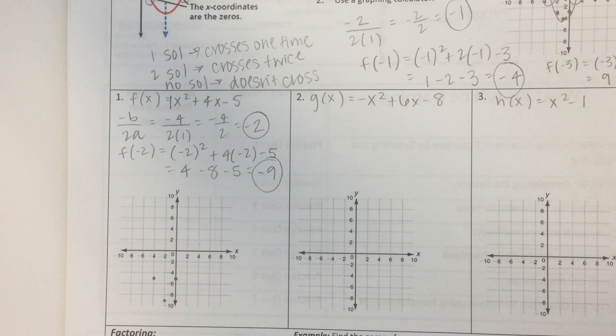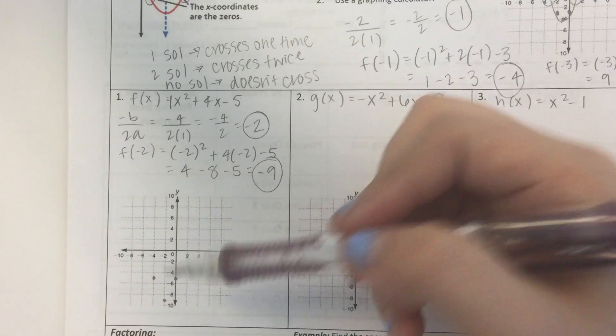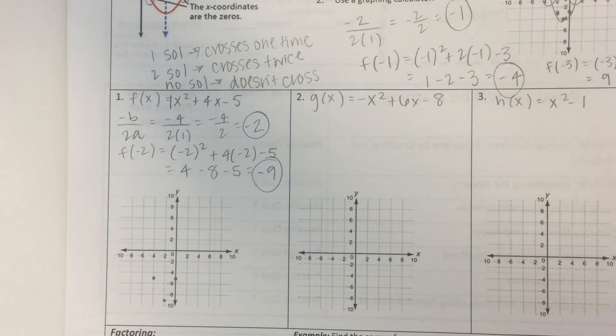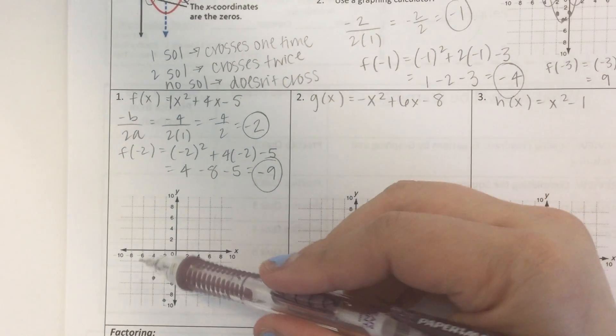But again, we need a point that's on the x-axis. So we can tell already that this is going to have two solutions, but we want to know what those solutions are. So let's test another point. Let's test negative 6, just for fun.